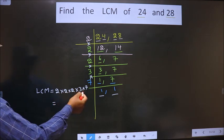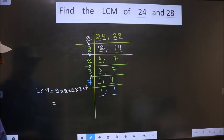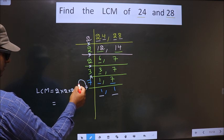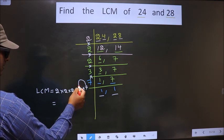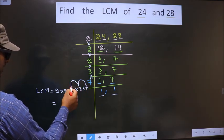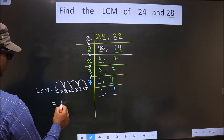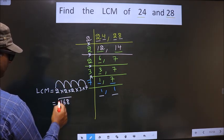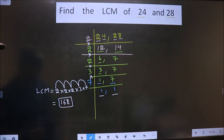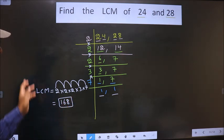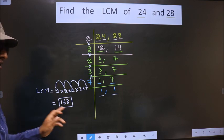So let us multiply all these numbers. 7 into 3, 21. 21 into 2, 42. 42 into 2, 84. 84 into 2, 168. This is our answer. Am I clear?